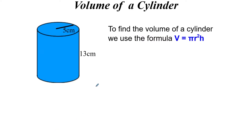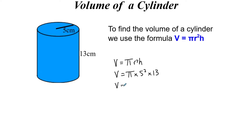Next, the volume of a cylinder — a little bit trickier. The formula is V equals pi r squared h. A cylinder is the three-dimensional version of a circle, which is why it has pi r squared — the area of a circle is pi r squared. So V equals pi r squared h: pi times the radius, which is 5, squared, times the height, which is 13. Remember, sometimes you're given the diameter instead of the radius, so watch out. Type it in using the pi button to get 1021.02 cm cubed.